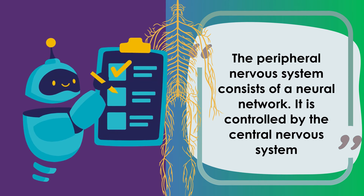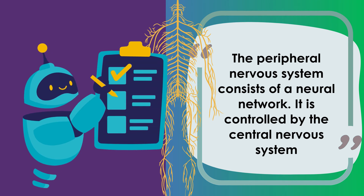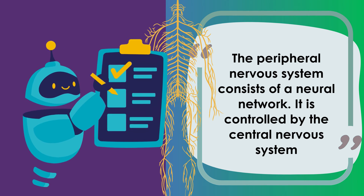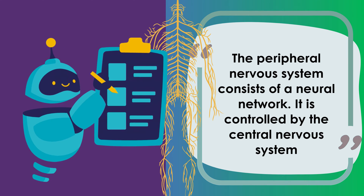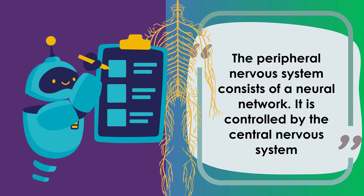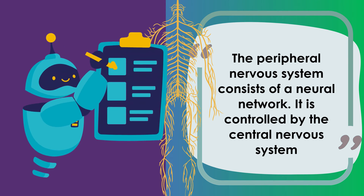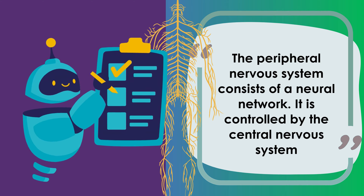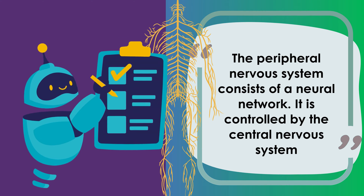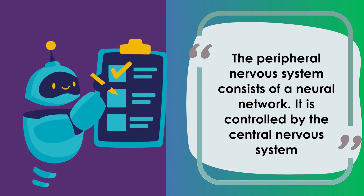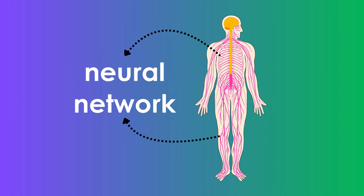Peripheral Nervous System. The peripheral nervous system consists of a neural network, and it is controlled by the central nervous system.